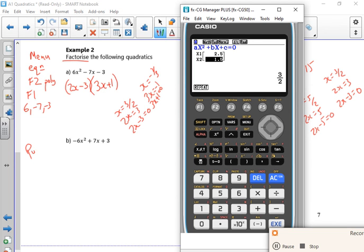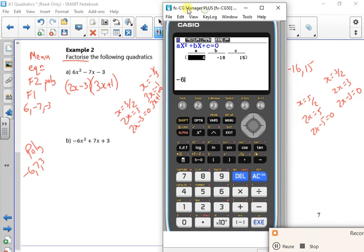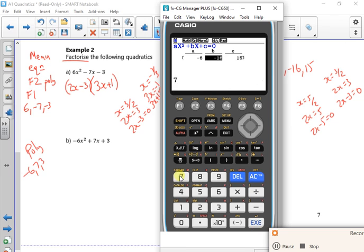So into poly, I'm going to put minus 6, 7 and 3. Minus 6, 7 and 3. So if you look, that gives me 3 over 2. So that one will be 2x minus 3. And the next one down is minus a third. So that would be 3x plus 1. They're factorised and not solved. And that's really, really important.